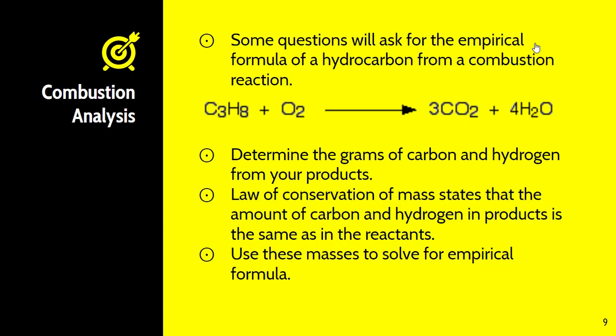The last thing we're going to look at is the combustion of a hydrocarbon and do a combustion analysis. Remember, combustion of a hydrocarbon involves a carbon and hydrogen molecule reacting with oxygen to produce carbon dioxide and water. From this, you determine the grams of carbon and hydrogen from your products — you'll be given grams of CO₂ and grams of H₂O, then determine the amount of carbon and hydrogen in those samples using the law of conservation of mass. From those masses, you can then solve for the empirical formula.